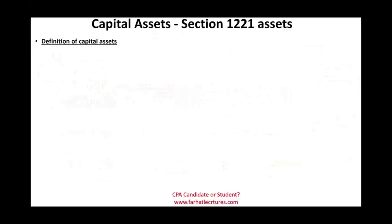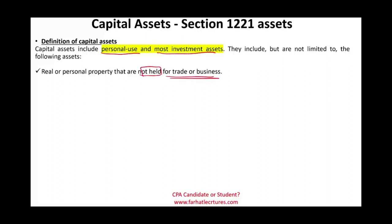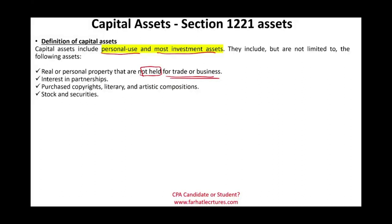So what is the definition of a capital asset? Basically, it's assets for personal use and most investment assets — stocks, bonds. More formally, real or personal property that is not held for trade or business. Remember, if held for trade or business, it becomes Section 1231. Also included are interests in a partnership, purchased copyrights, artistic compositions, stocks, securities, and other assets held for investment purposes, like land.